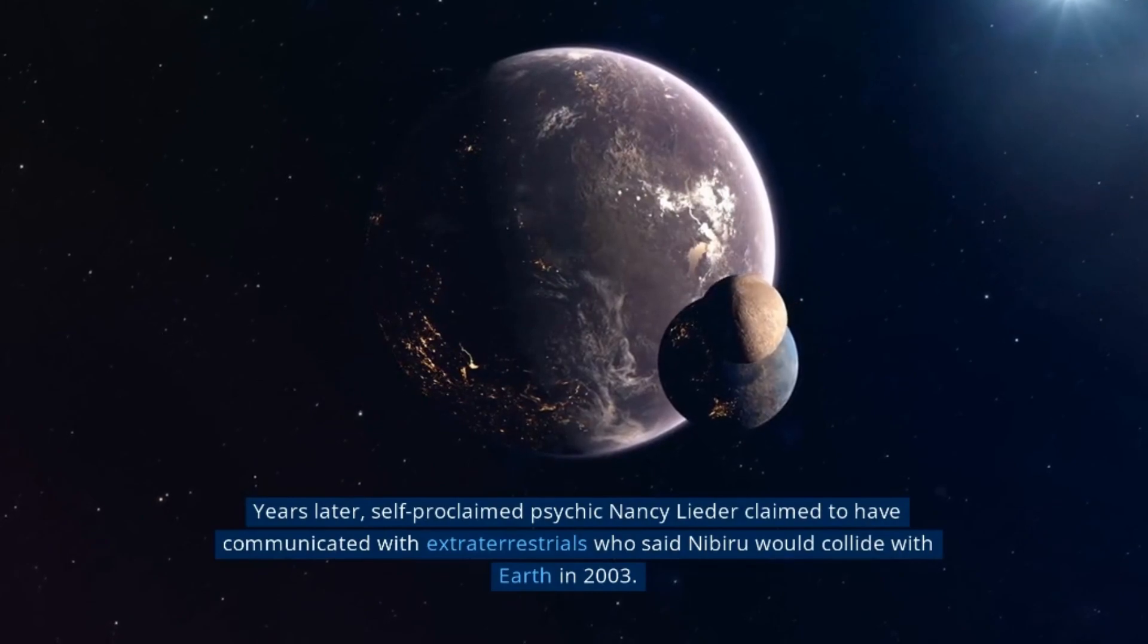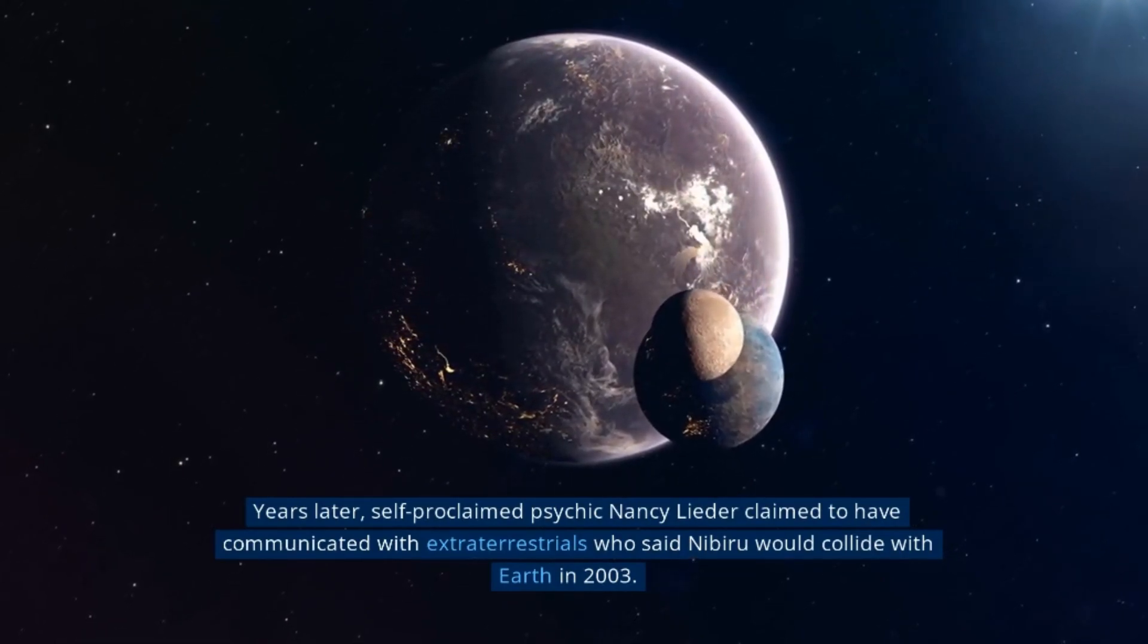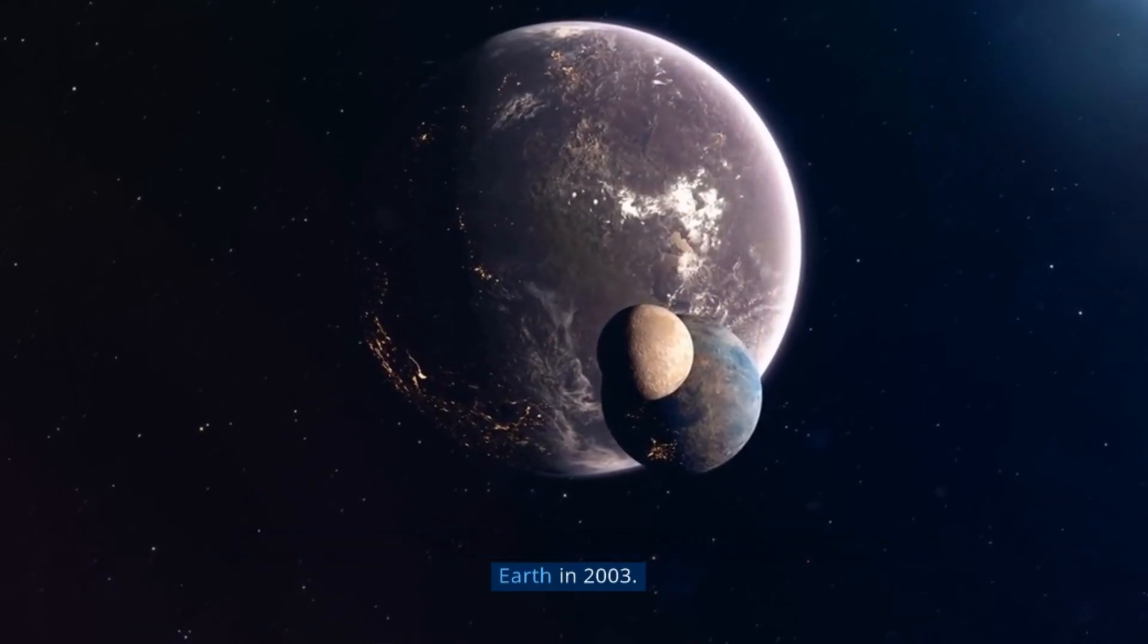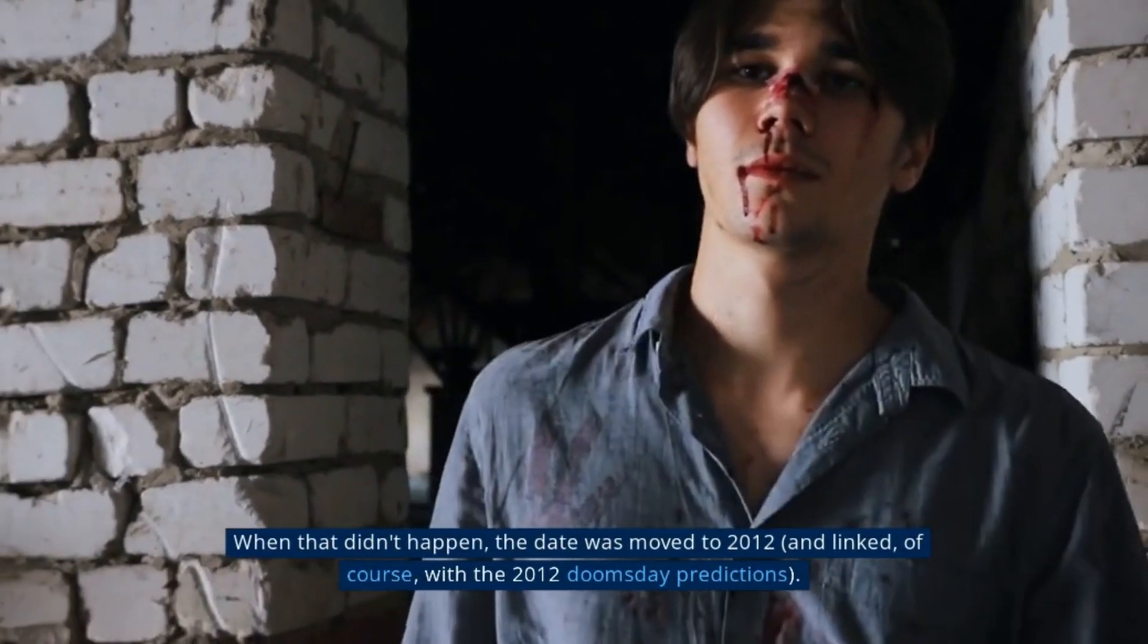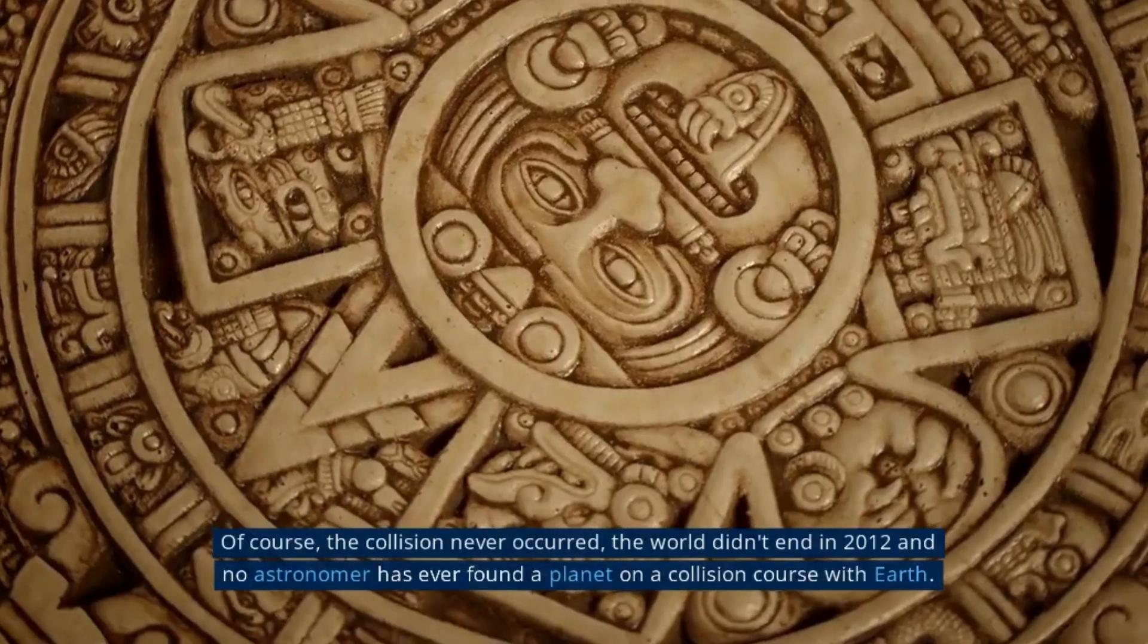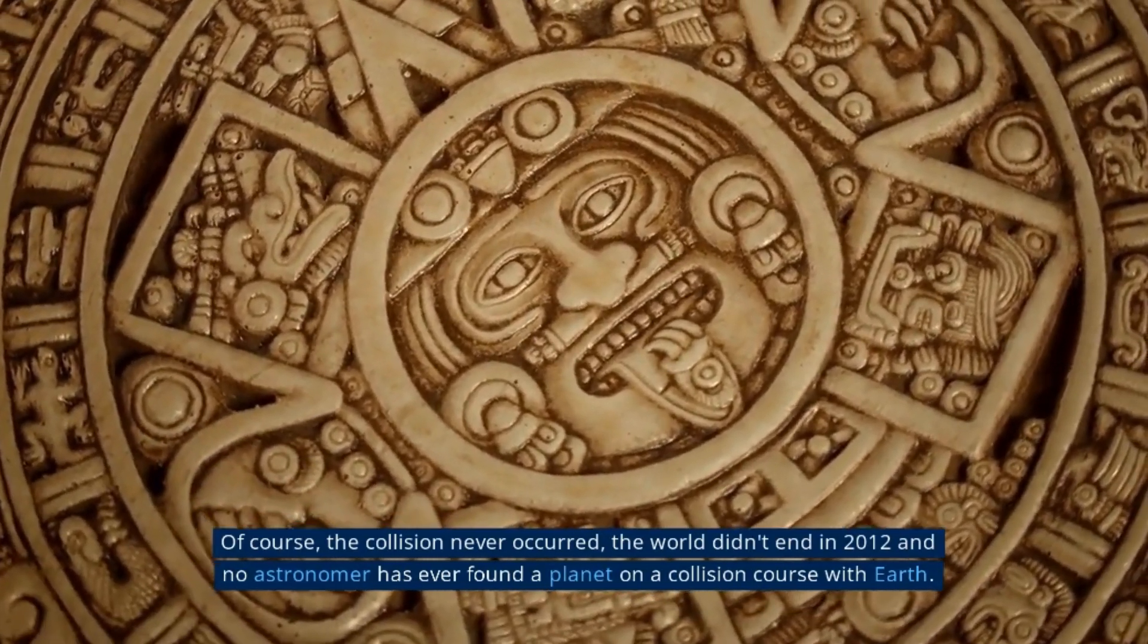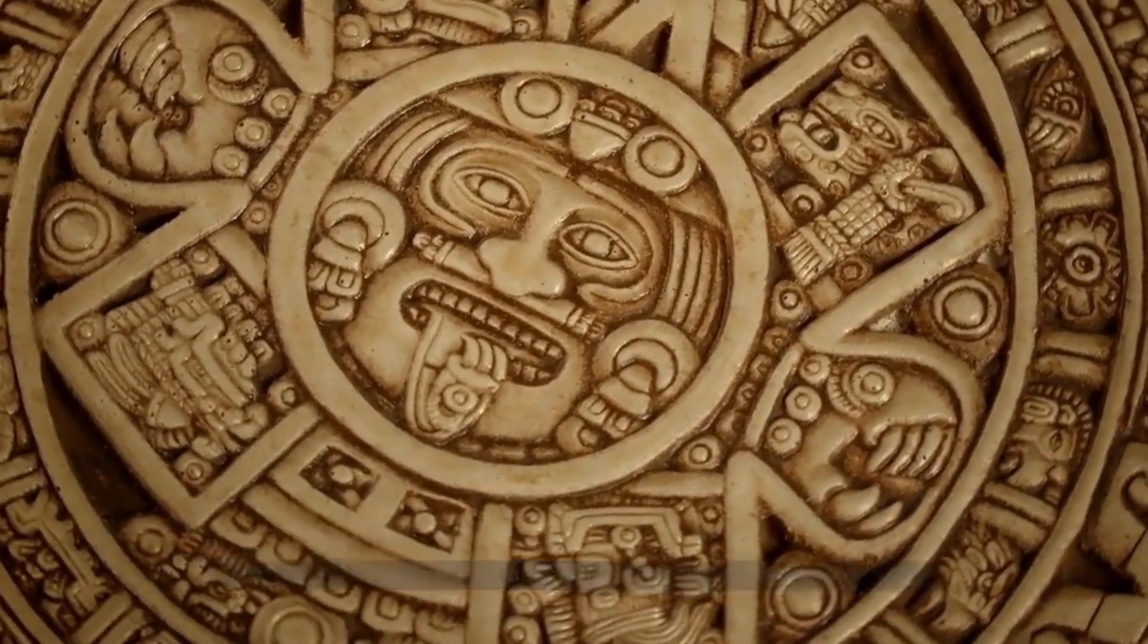Years later, self-proclaimed psychic Nancy Lieder claimed to have communicated with extraterrestrials who said Nibiru would collide with Earth in 2003. When that didn't happen, the date was moved to 2012 and linked with the 2012 doomsday predictions. Of course, the collision never occurred, the world didn't end in 2012, and no astronomer has ever found a planet on a collision course with Earth.